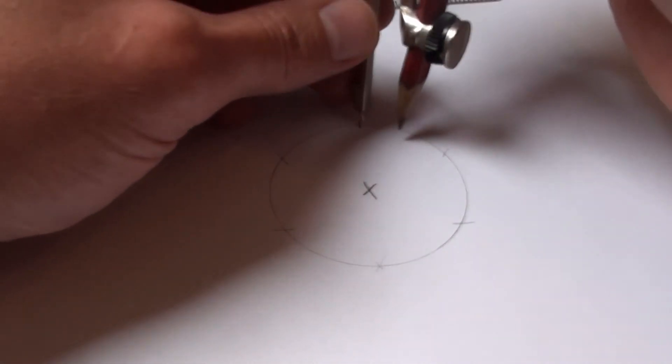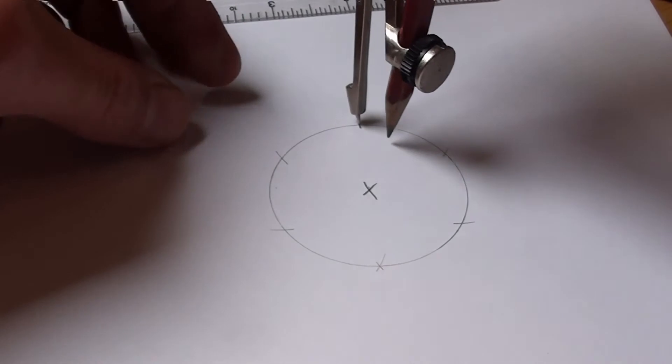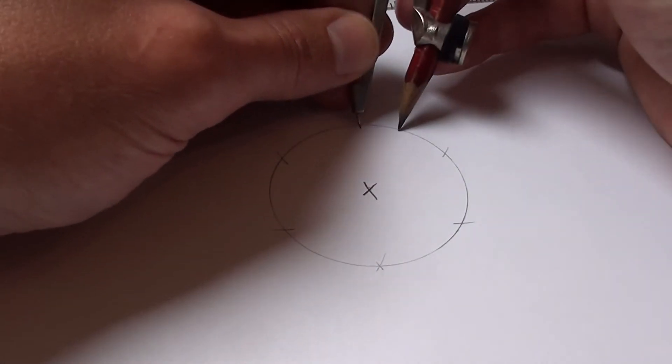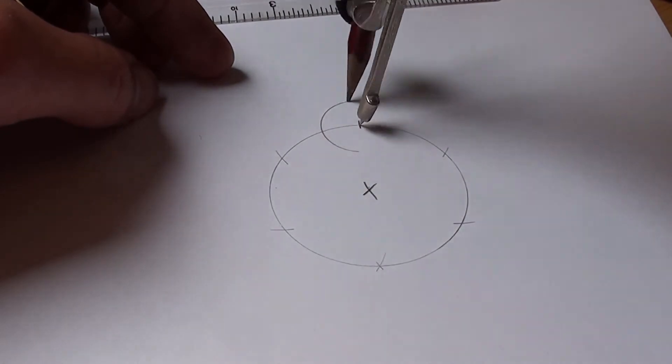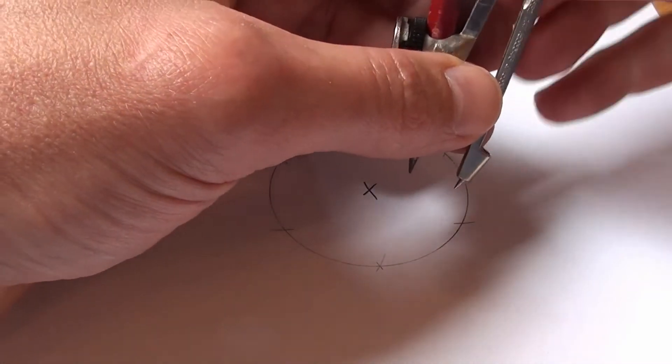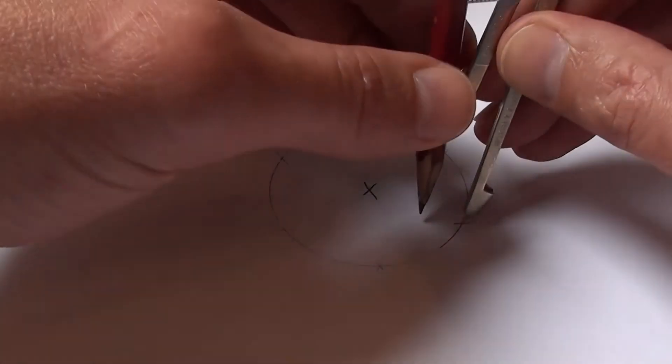And now I'm going to draw a full 11mm circle around three of these marks that I've made. There's one. Another one here.